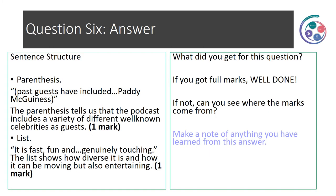So that's our answer. First of all, we have parenthesis: 'Past guests have included... Paddy McGuinness.' The parenthesis tells us that the podcast includes a variety of different well-known celebrities as guests — that gets one mark. Then we've got a list: 'it is fast, fun and genuinely touching.' This list tells us how diverse it is and how it can be moving but also entertaining. Can you see where the marks come from? Make a note of anything that you've learned from this particular answer.